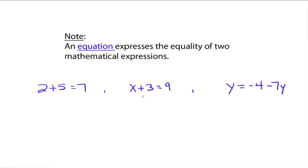Take, for example, the second one. The mathematical expression on the left is x plus 3, and the mathematical expression on the right is 9. We've got the equation x plus 3 equals 9, because you've got this expression equal to that expression.